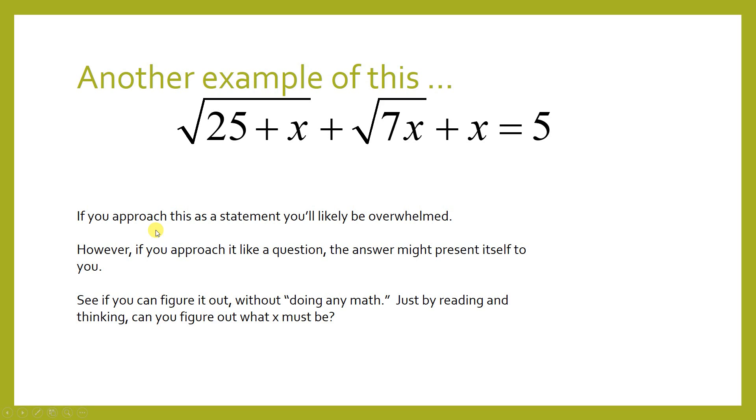Let's take a look at another example. This example right here, goodness gracious, that looks impossible, right? If you just read it, the square root of 25 plus x plus the square root of 7x plus x equals 5? Probably really confusing. Your chances of solving it might not be so great, but if you can read it as a question, if you can read it as algebra, the answer might just jump out of it. If you can figure it out without doing any math, leave me a comment below. I'd like to hear what you think.